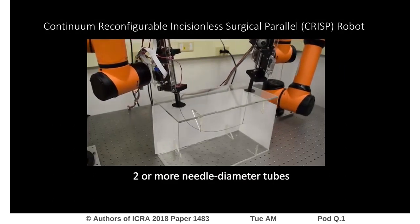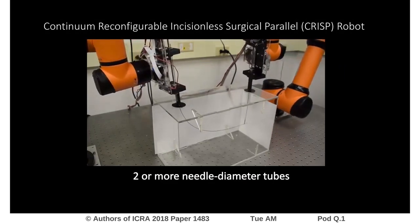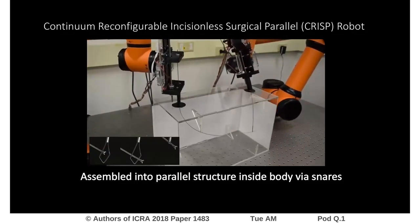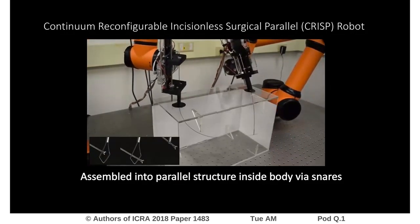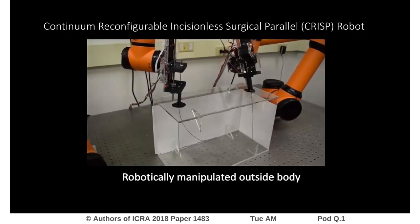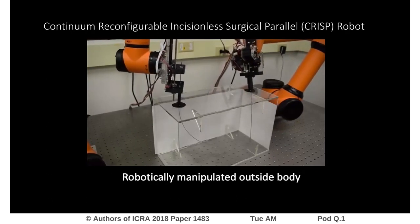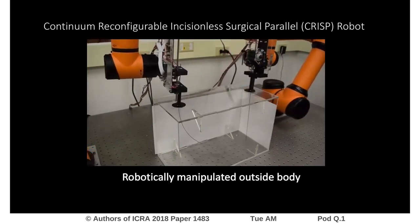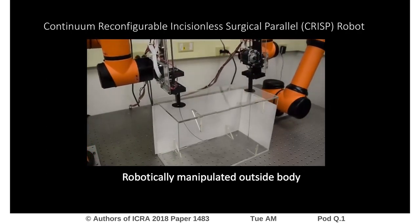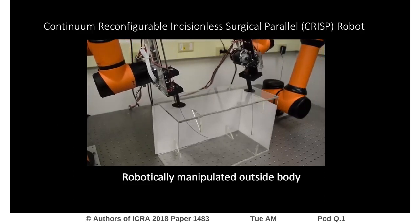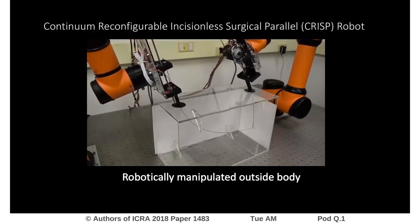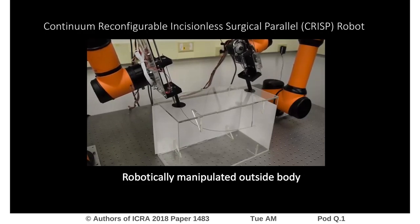The CRISP robot consists of two or more needle diameter tubes that are inserted into the patient's body and assembled into a parallel structure via snares, which allow the tubes to grip one another. The tubes are then manipulated robotically outside the patient's body, changing the shape of the structure inside the body. In this work, we consider the case where there is a chip-tip camera affixed to the end of one of the tubes, and it is the desire of the surgeon to visualize patient anatomy using that camera.